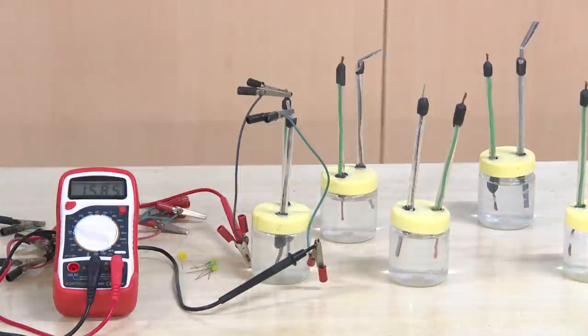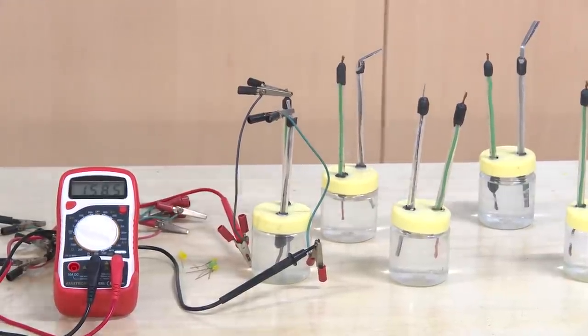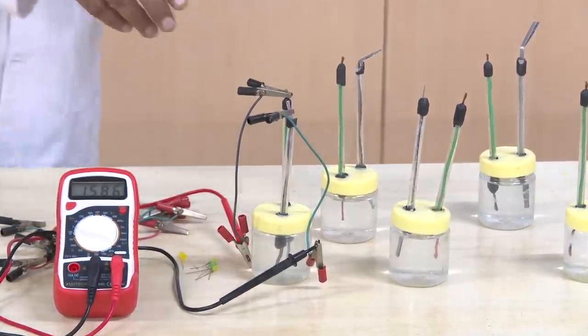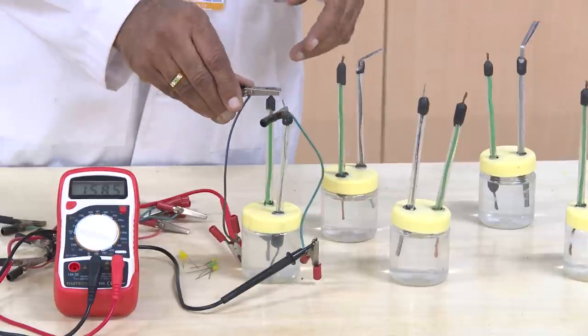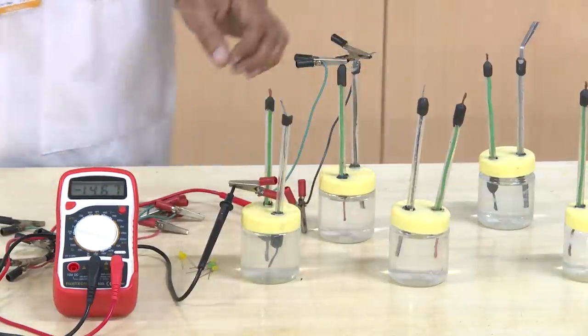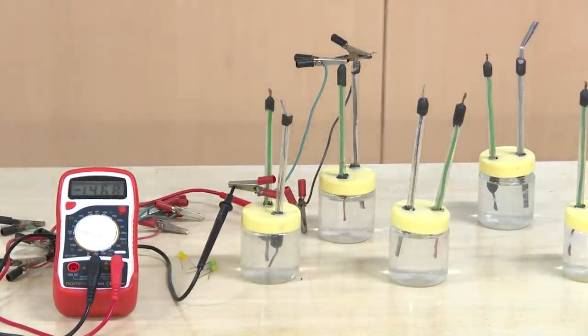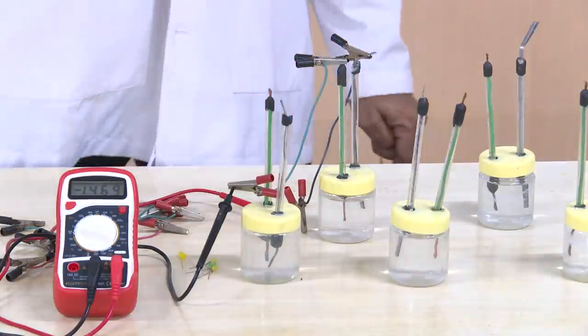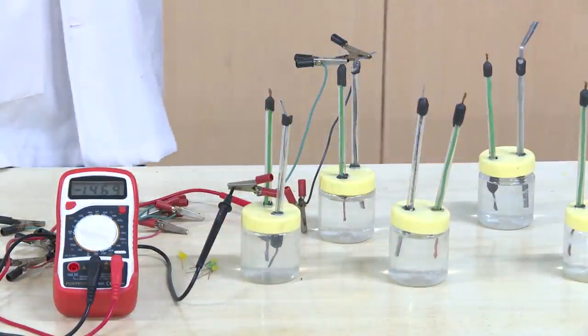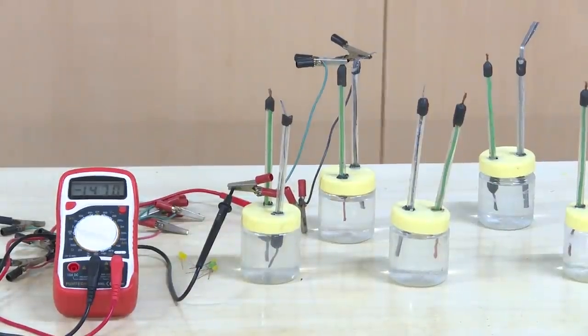Depending on the conductivity of the electrolyte, the voltage may slightly vary. Now every cell we will measure the voltage like this. I have done connection for the next cell which is showing 1.468. So like this, each one of these cells is going to show you a voltage of 1.45 to 1.5.